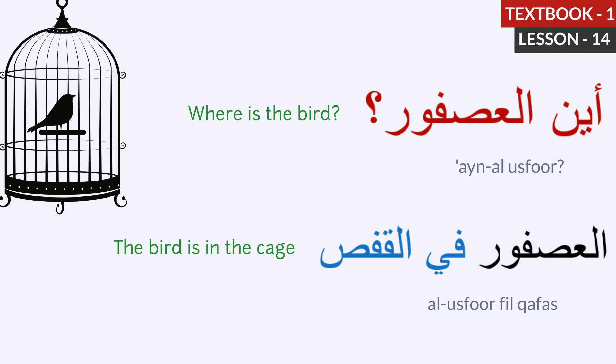Let's repeat. Aina al-usfur. Where is the bird? Al-usfur. Fil-kafas. The bird is in the cage.